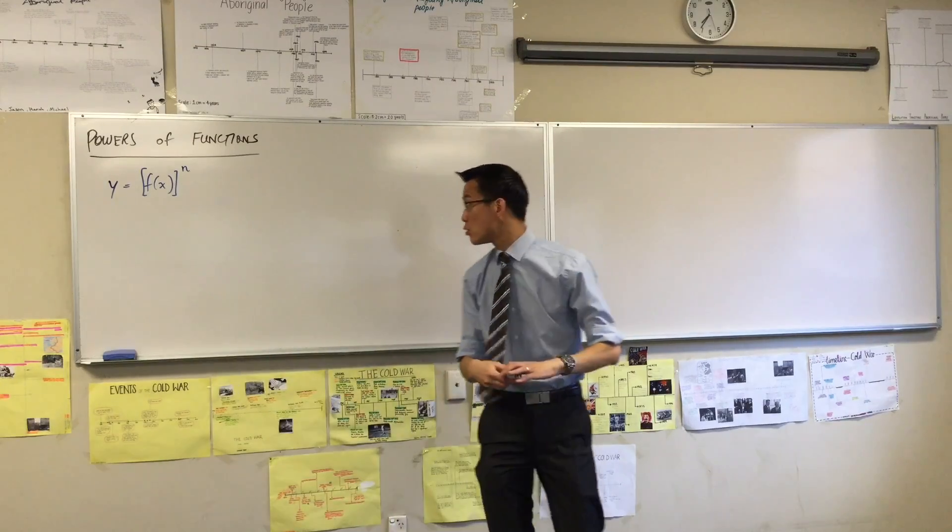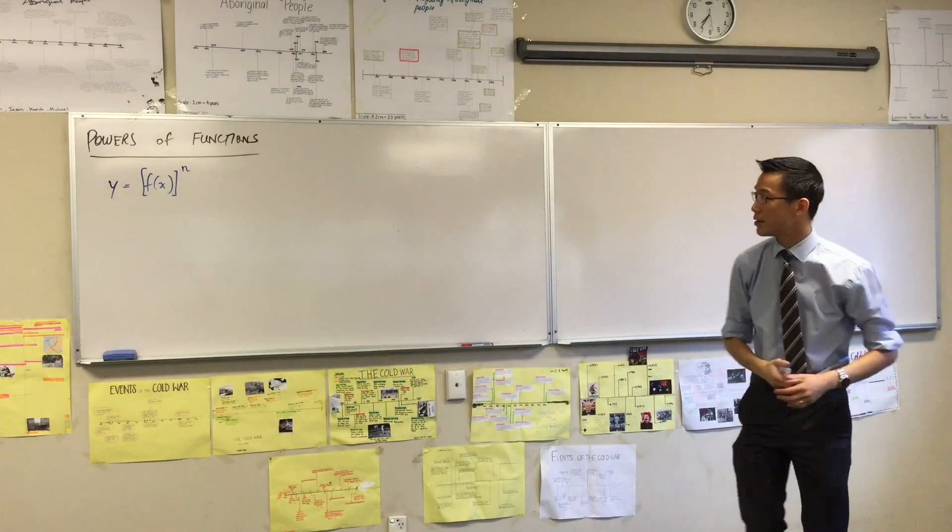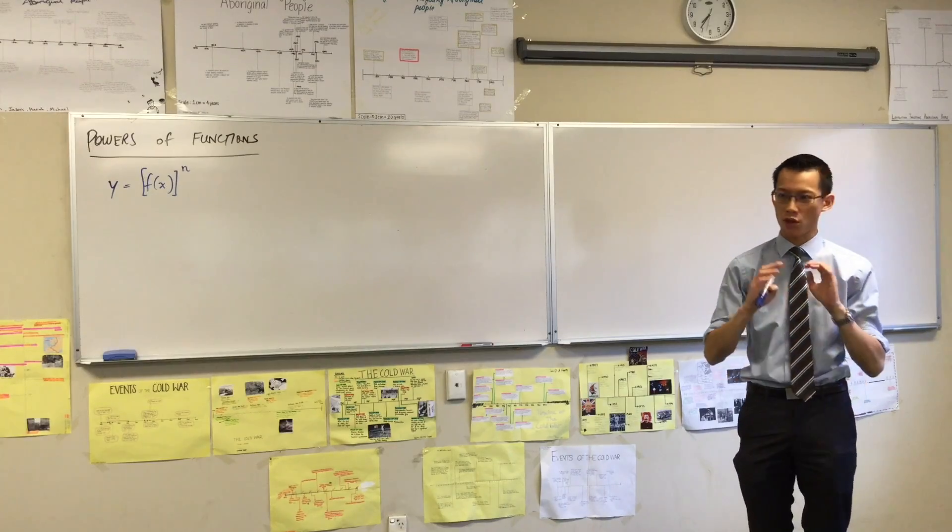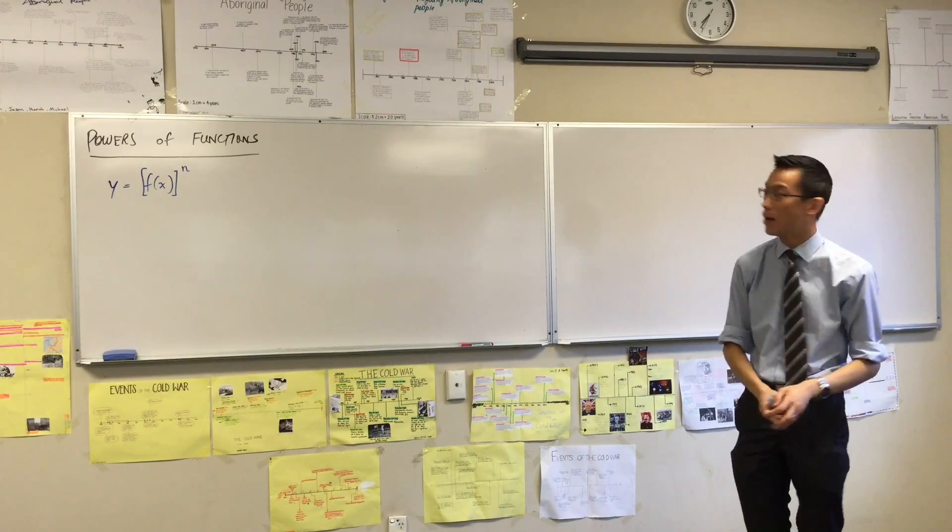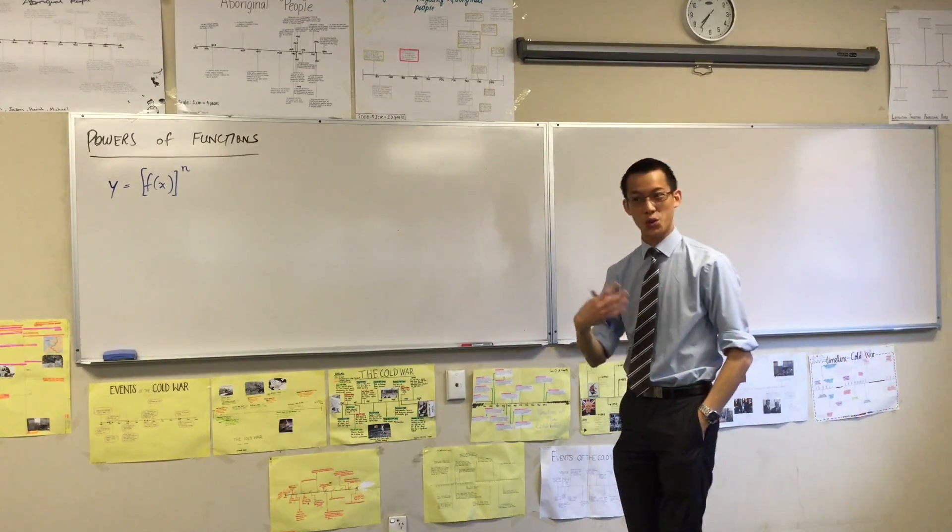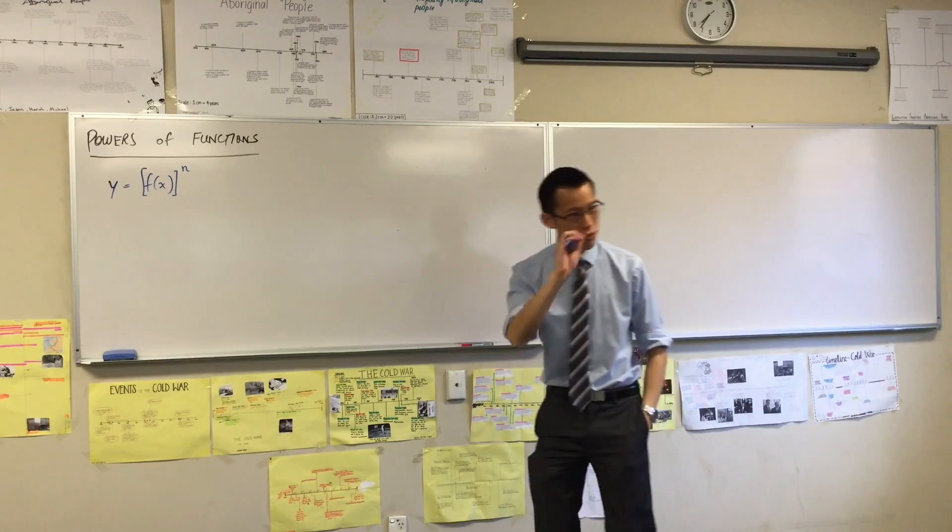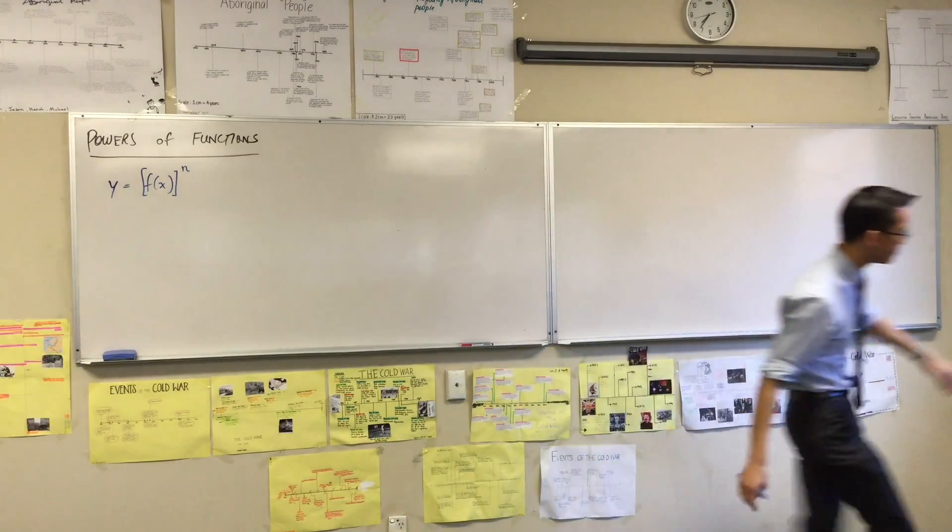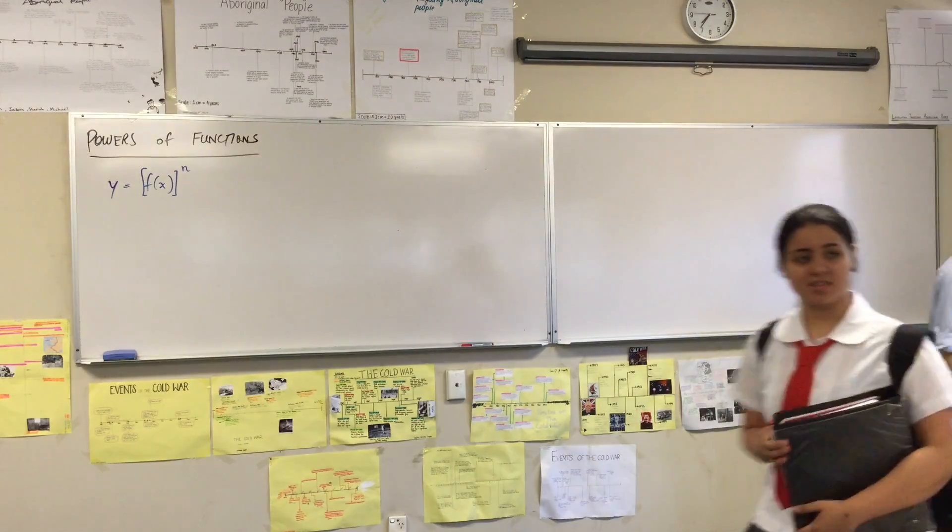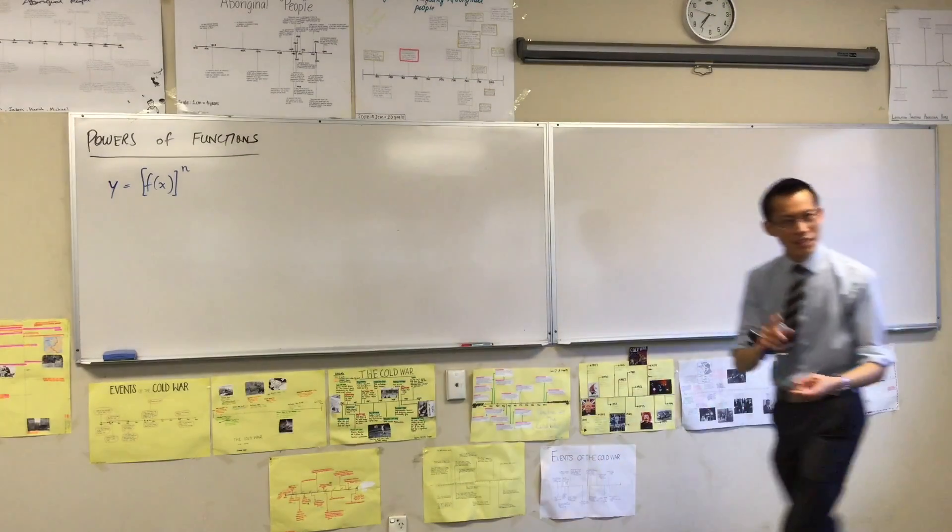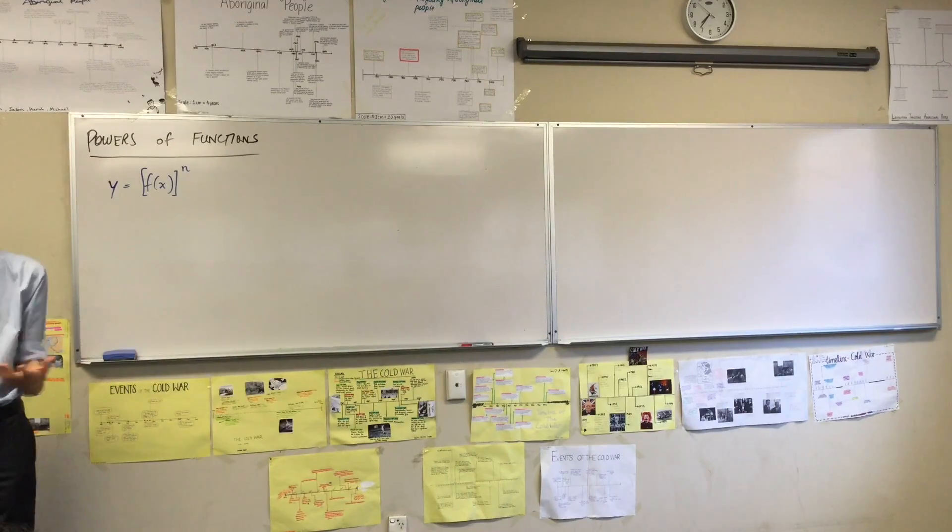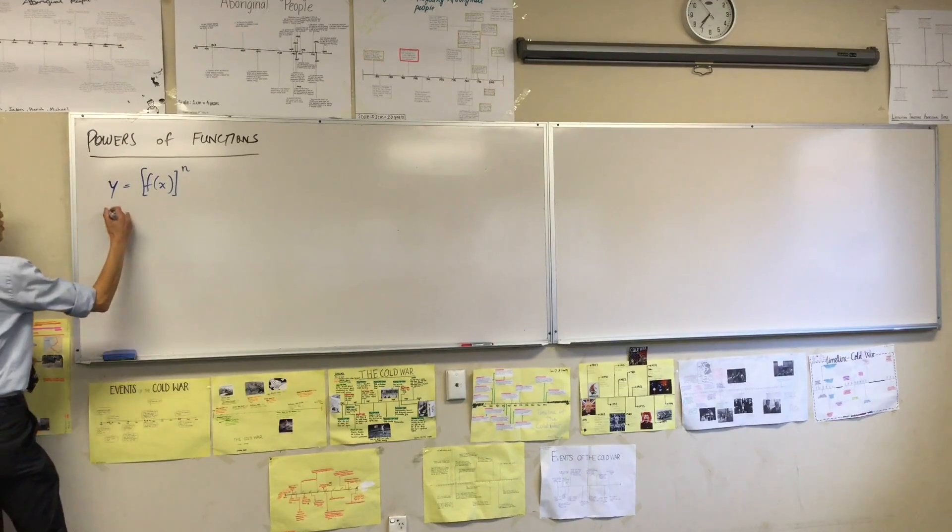Strictly speaking, the classical ones that we're going to look at, the most important ones, the most important powers are a half and two. Those are the most common ones, and you'll see them all the time when you take the square root of a function, when you square a function. There are some quite predictable features that are important for us. However, there is a slight variant on this which also comes up somewhat frequently.